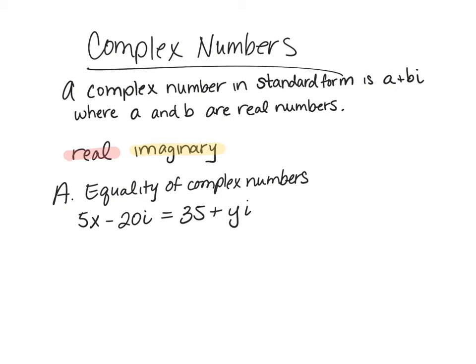We're going to talk about complex numbers today. Complex numbers are when we have real and imaginary numbers together. A complex number in standard form is a plus bi, where a and b are real numbers. So we're going to use red highlight for real parts of the complex number and then yellow for the imaginary part.